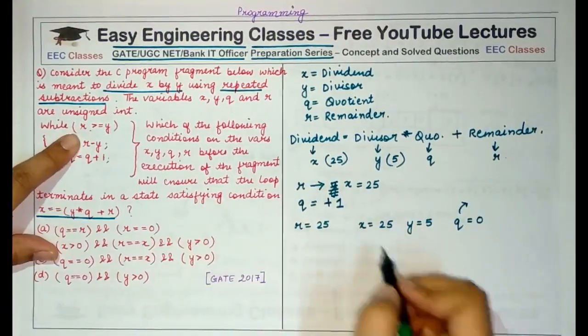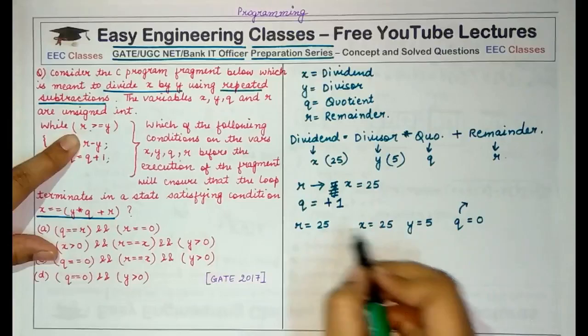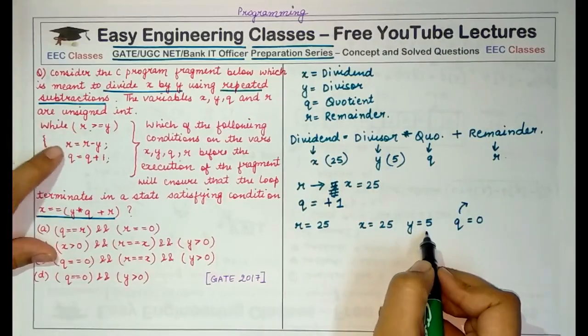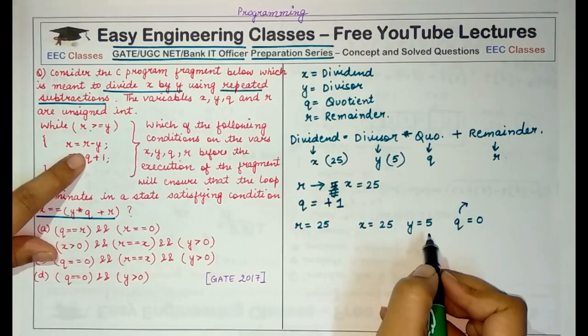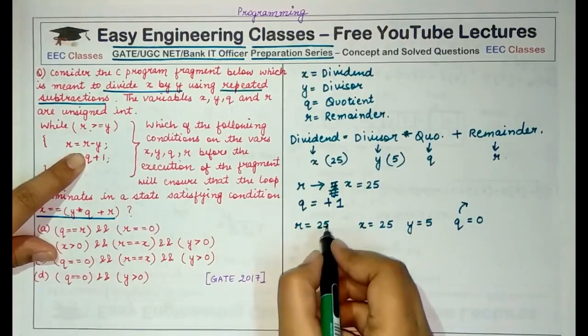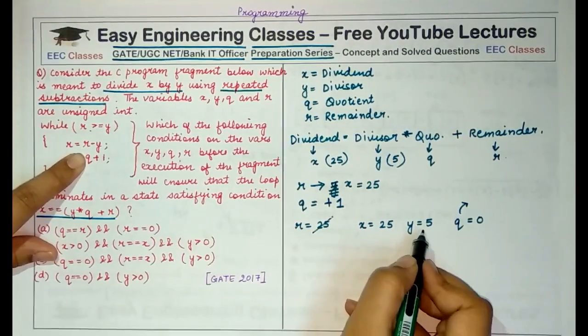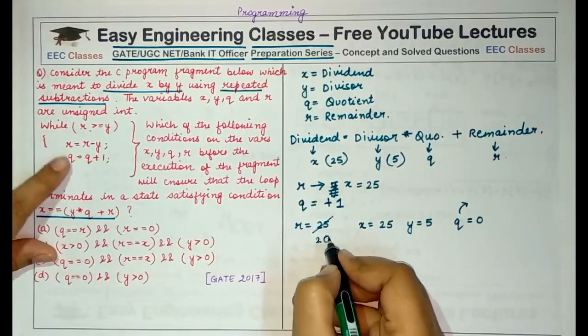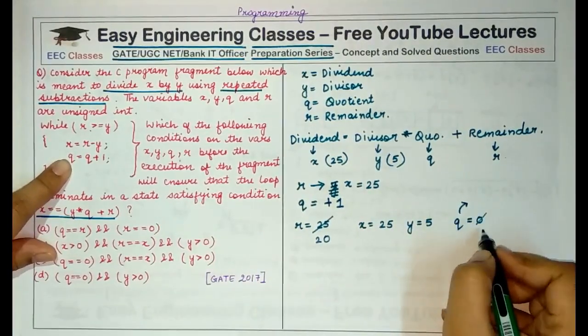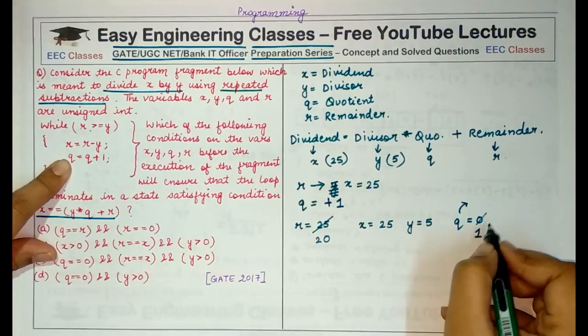R is greater than equal to Y, yes 25 is greater than 5, so we enter into the loop and I subtract Y from R, so the new value of R becomes 25 minus 5 that is 20 and I increment Q by 1, so the new value of Q becomes 1.